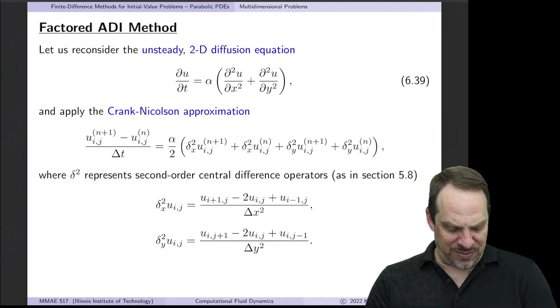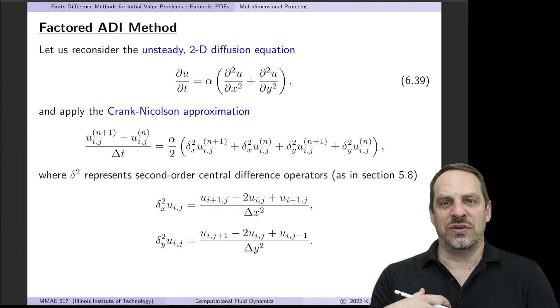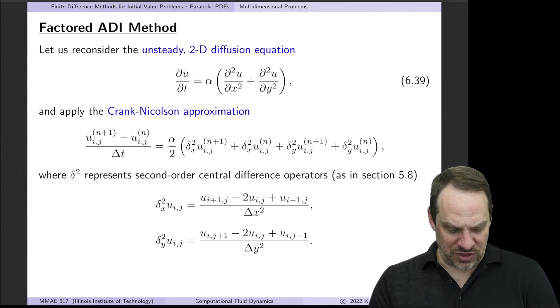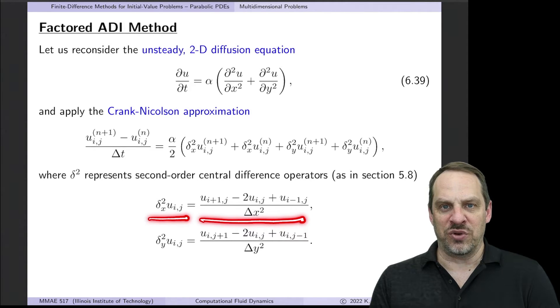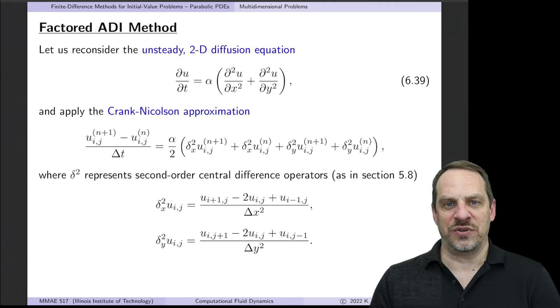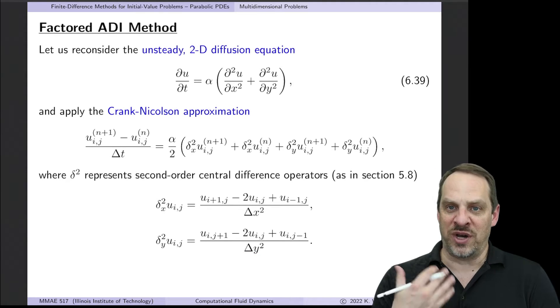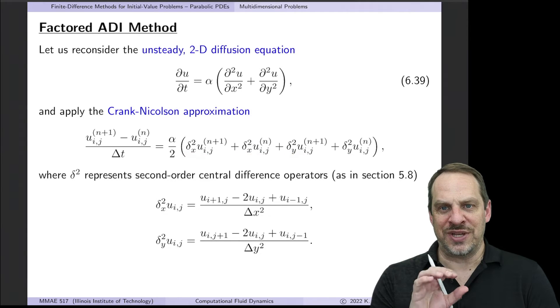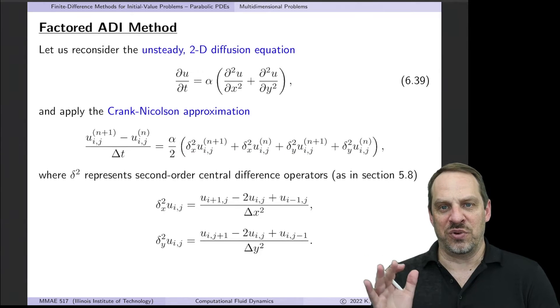Now you notice here I'm using some compact notation. This delta squared is going to represent the second-order accurate central difference approximation for these second derivatives. So delta_x squared operating on u_ij is this full operator that we're familiar with. Same thing for the delta_y squared operating on u_ij. So we're going to use that more compact notation here so we can see what's happening more clearly than if we were to write this all out.